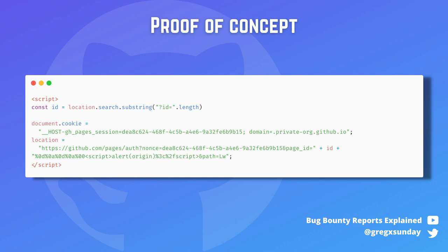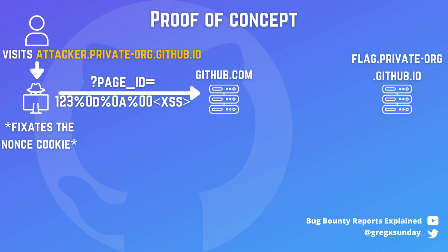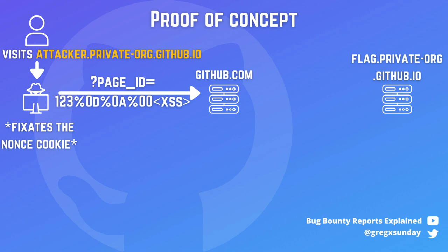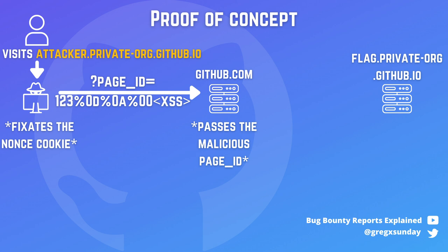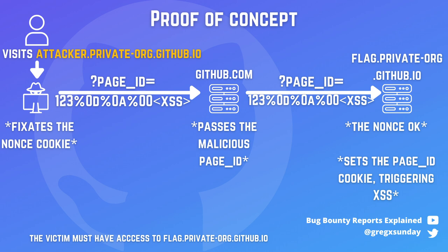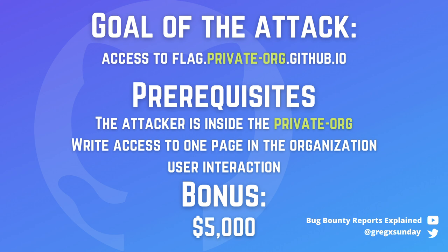So this is the proof of concept that will be hosted on attacker.private-org.github.io. It will send the cookie to the parent domain with a nonce known by us, and will send the victim into a valid authentication flow with the nonce known by us and with the page ID of the page we want to attack. Once the victim goes through the flow, they get back to the GitHub page where the XSS is executed. This way you could access any page that the attacked victim would have access to. This made the hunters eligible for the $5,000 bonus.